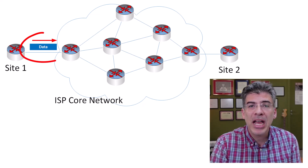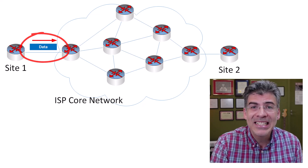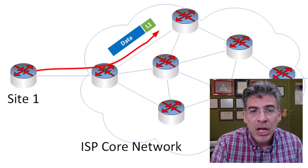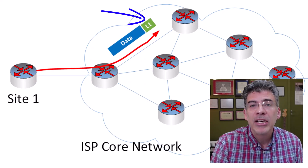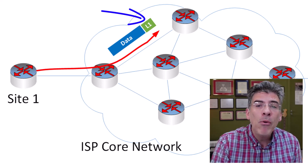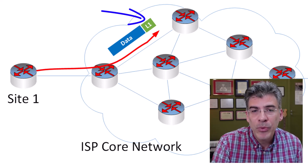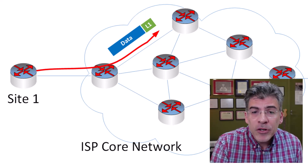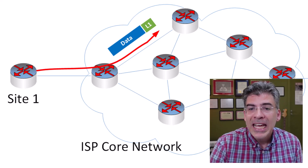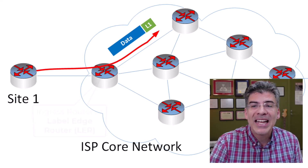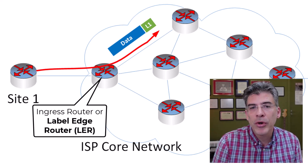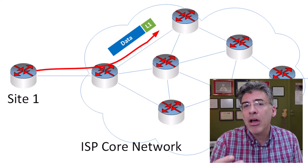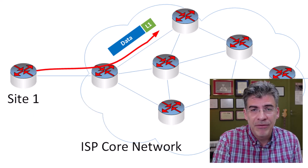Here we see a data packet being transmitted from Site 1 and sent into the network. As soon as it reaches the first router within the MPLS network, we see a label being pre-pended to this packet. These labels determine how packets are forwarded within the MPLS network, making the process more efficient than traditional IP-based routing. When a packet first enters the MPLS network, it's assigned a label by what is known as an ingress router, also known as a label edge router, or LER. This label is determined based on various criteria configured within that router.